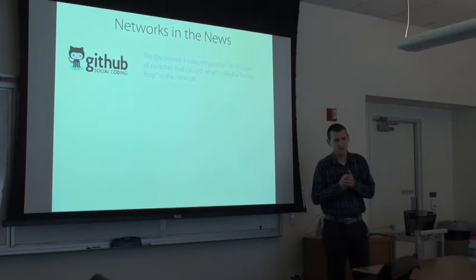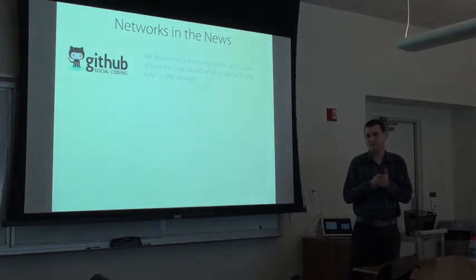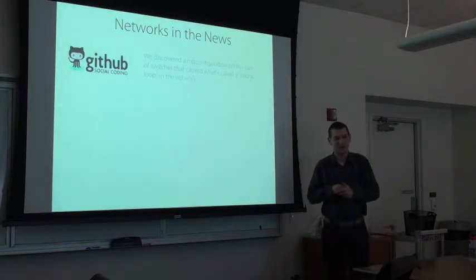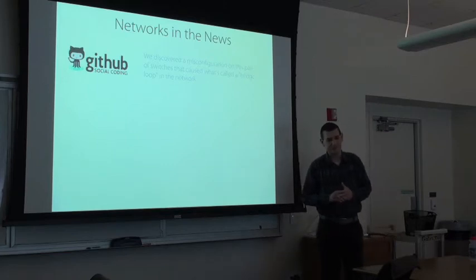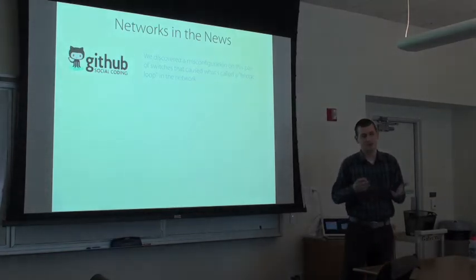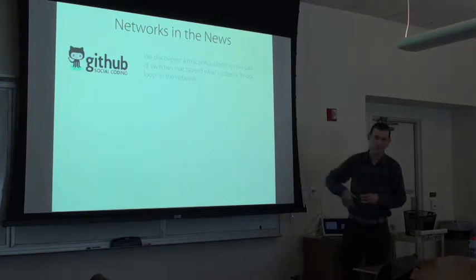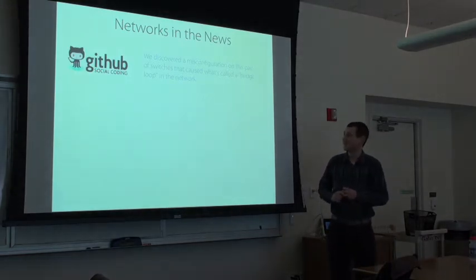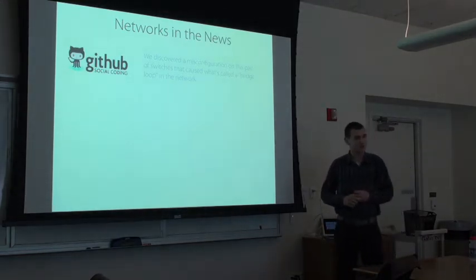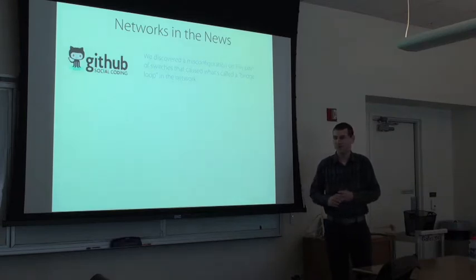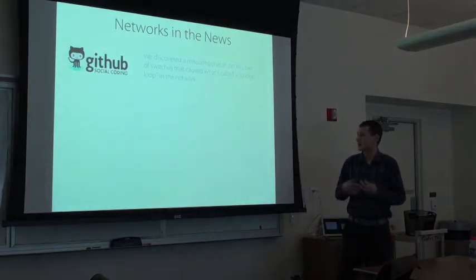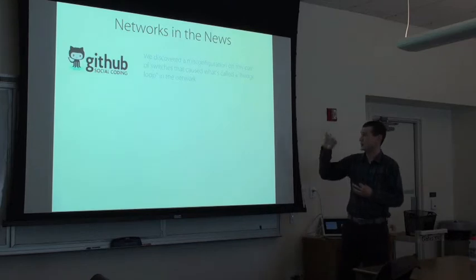The motivation for this whole project is to address some serious issues that networks have with respect to reliability. As a kind of motivational rogue's gallery, I'll give some examples of network failures from the last few years. I assume most of you use GitHub to store your code. If you were using GitHub just after Thanksgiving last year, GitHub went down for a bunch of accounts for the better part of the day. They did a post-mortem and discovered that the outage was caused by a misconfiguration between a pair of switches.